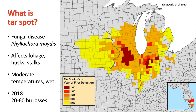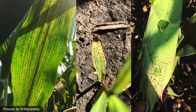In 2018, we had a significant epidemic of tar spot that affected many parts of the Midwest. In Illinois, we saw 20 to 35 bushel losses, and in some places — for example, Michigan — upwards of 60 bushel per acre yield losses.